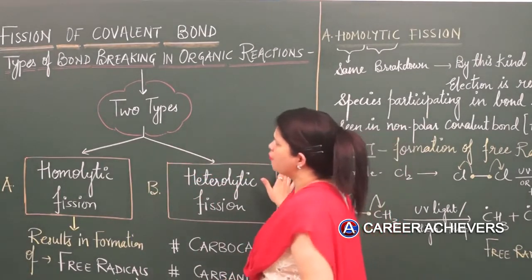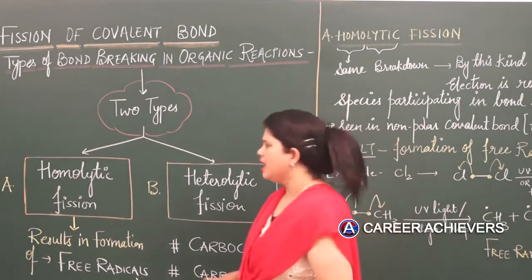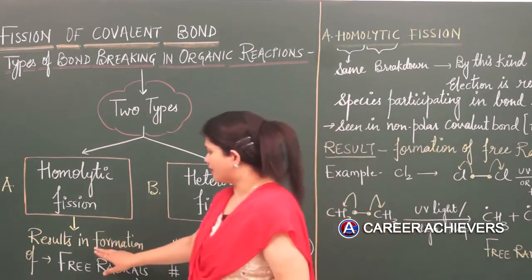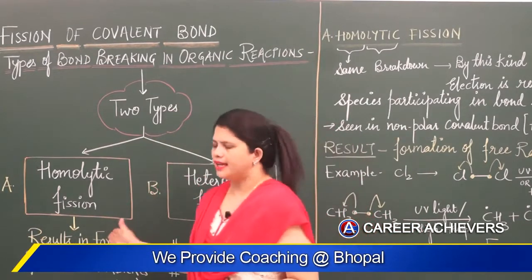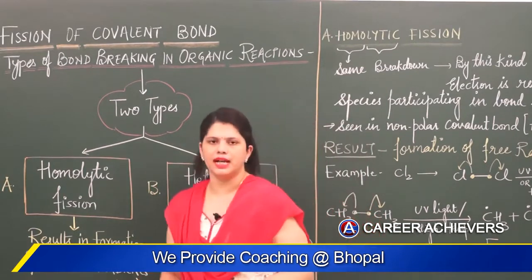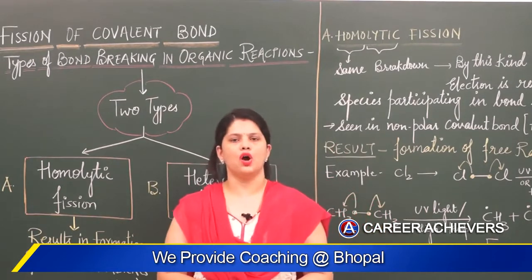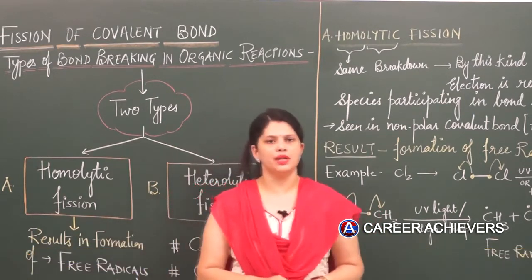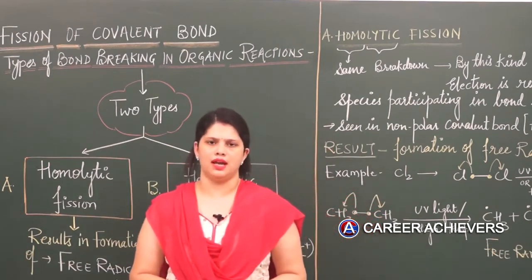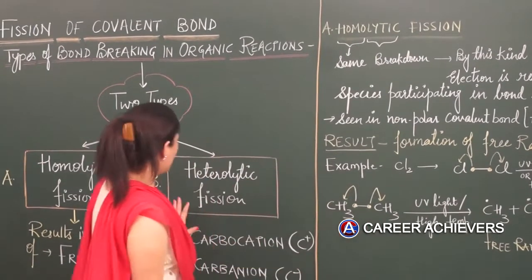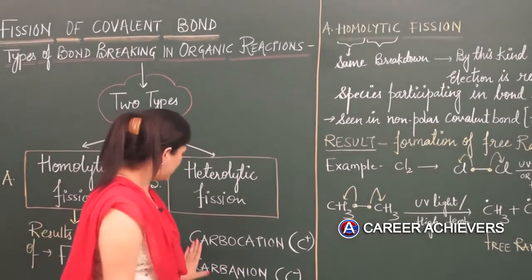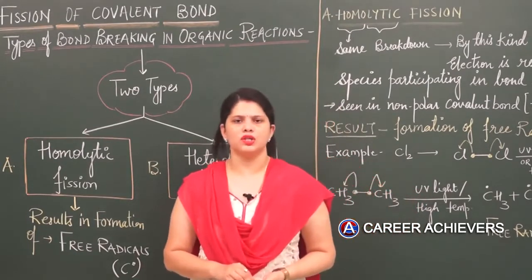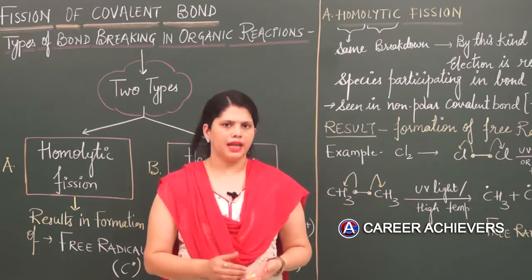The topic for today's lecture is fission of covalent bond. It is of two types: the first is homolytic fission and the second is heterolytic fission. Whenever there is a homolytic fission, the result of this type of breakdown of covalent bond always generates a free radical. Whereas if there is heterolytic fission, the species that develop are called charged species — the two main important ones being carbocations and carbanions.